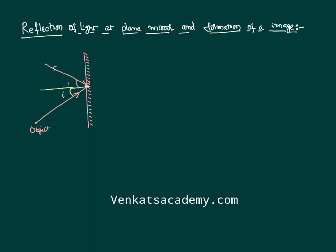This angle is called the angle of reflection. And of course, as per the laws of reflection, angle of incidence equals angle of reflection. As we have discussed, this light ray was supposed to go like this but it has gone like this. This angle is called the angle of deviation. We have already explained in the previous video that angle of deviation is either 180 minus 2i or 180 minus 2r.